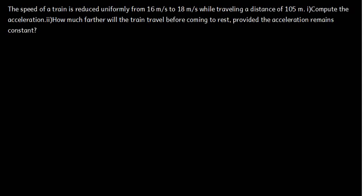In this video, we are going to talk about kinematics. We want to see how we can solve this question. The question says: the speed of a train is reduced uniformly from 16 meters per second to 18 meters per second while traveling a distance of 105 meters. Part 1: compute the acceleration. Part 2: how much further will the train travel before coming to rest, provided the acceleration remains constant?